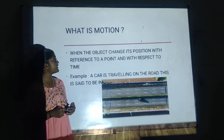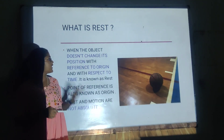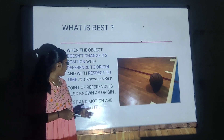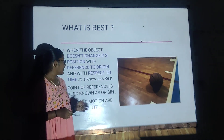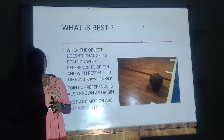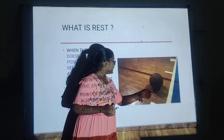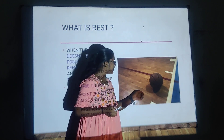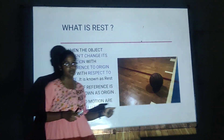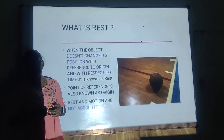Now let us see what is rest. When the object does not change its position with reference to origin and with respect to time, it is known as rest. Point of reference is also known as origin. Rest and motion are not absolute.